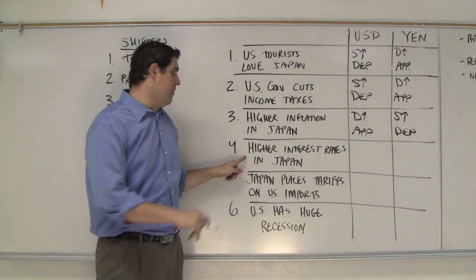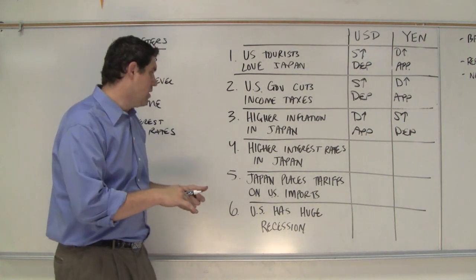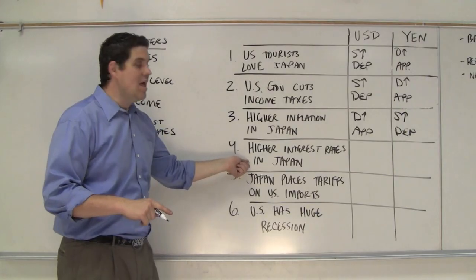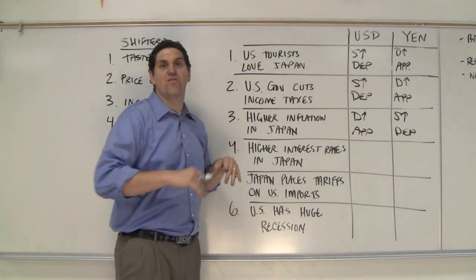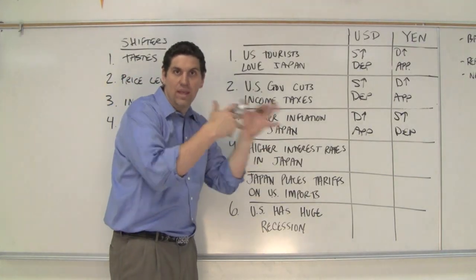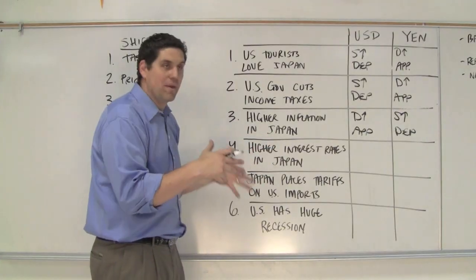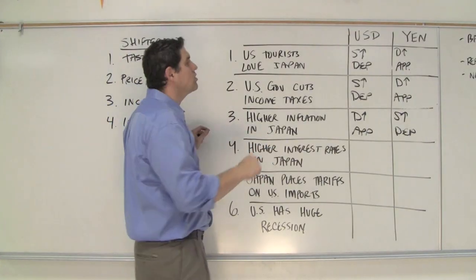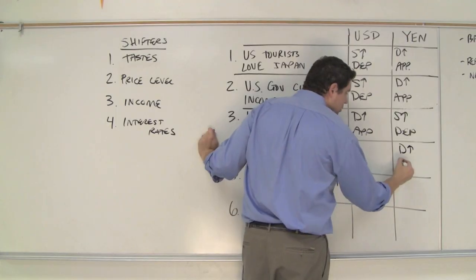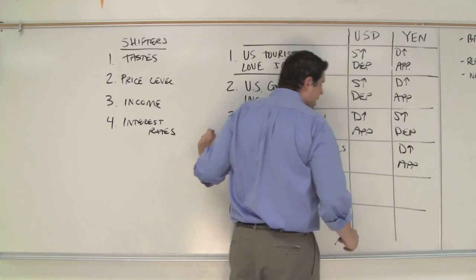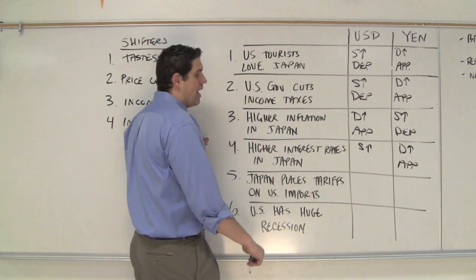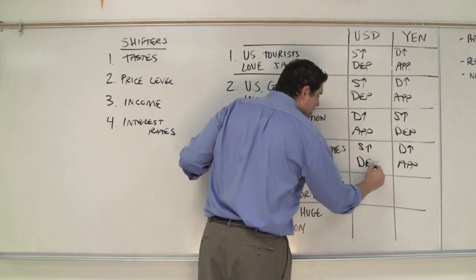Interest rates — the trickiest one, this is the one that was on the previous video. If interest rates are higher in Japan, that means Americans want to take their money, convert it into yen, and go get that higher interest rate through bonds or stocks or something else — they want to get that high interest rate. So the demand for yen would increase, which would cause the yen to appreciate, and we have to supply more dollars to go get those yen, and it would cause the dollar to depreciate.